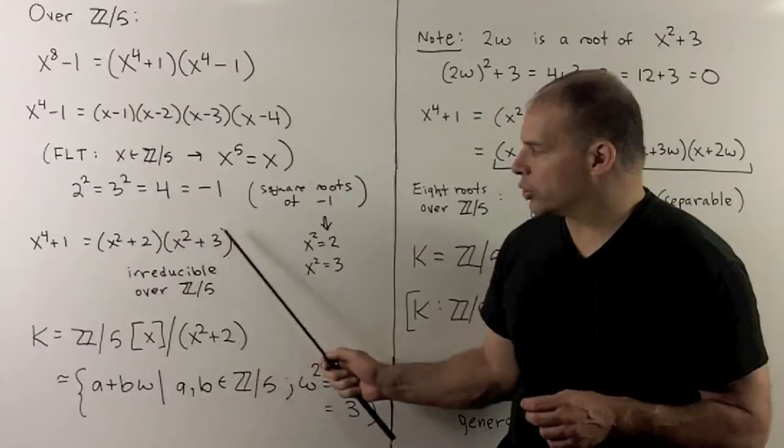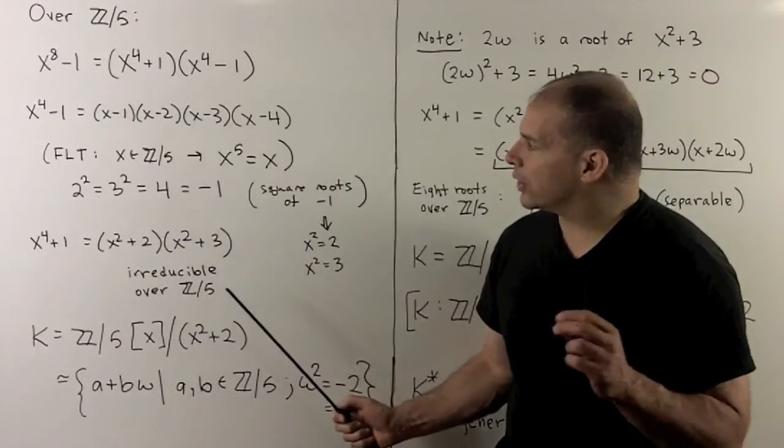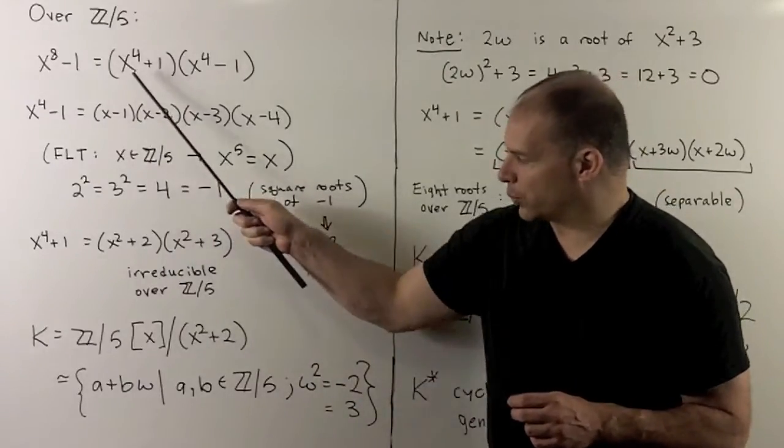Straightforward check that these are both irreducible over Z mod 5. And that's going to be our full factorization of x^8 - 1.